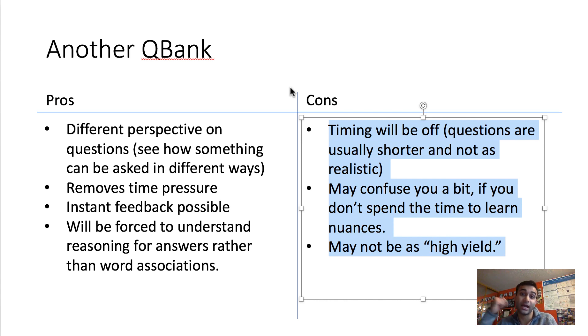So what are the cons of doing another QBank? The cons of another QBank is that your timing for test day may be off because more often than not, Amboss, Kaplan, whatever it is, those questions tend to sometimes be a bit shorter. And sometimes also take less amount of time to answer because they may not be easier, but there just takes less time to understand.